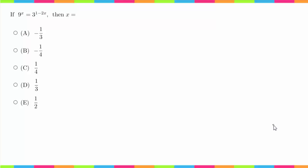Hey guys, we are now working on question number 32. So this question says, if 9 to the x equals 3 to the 1 minus 2x, then x equals what?